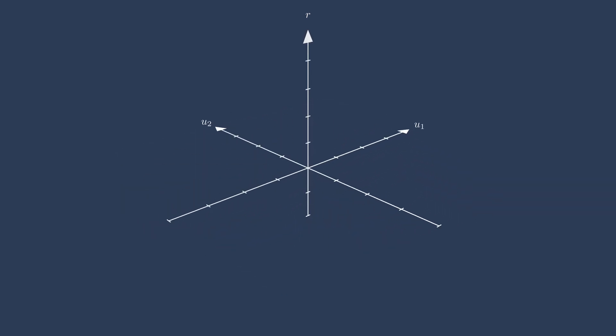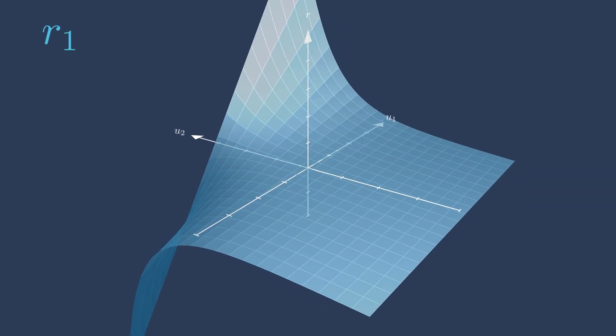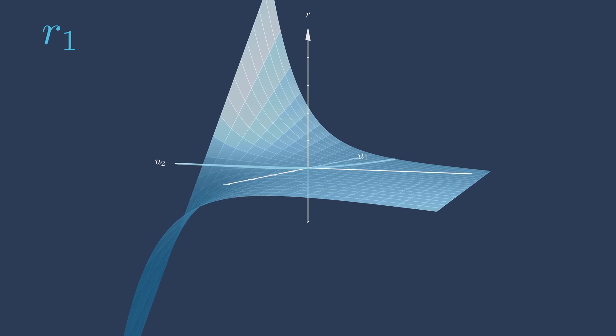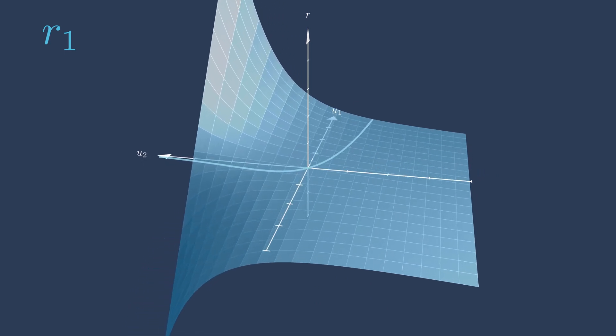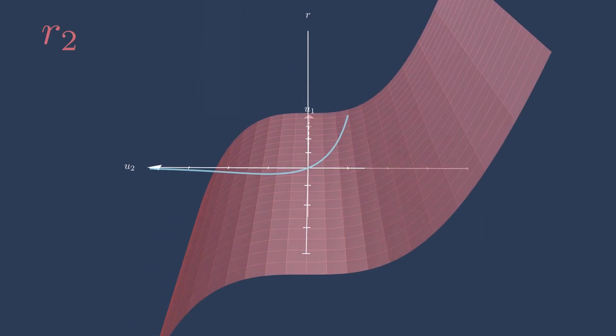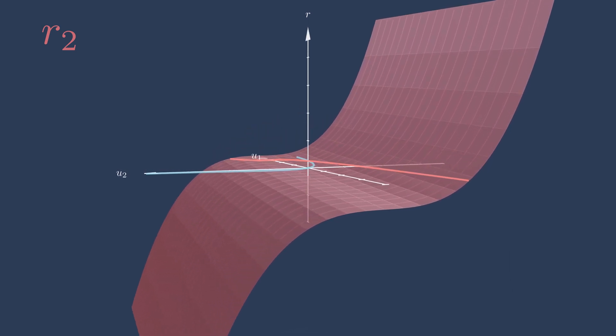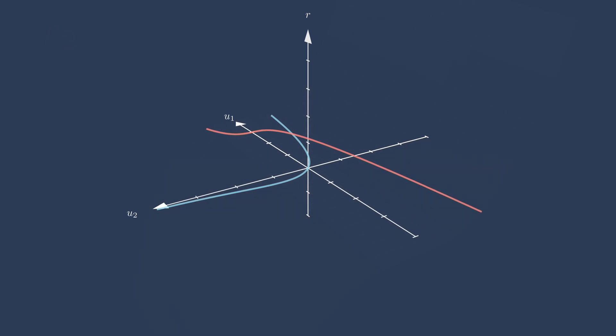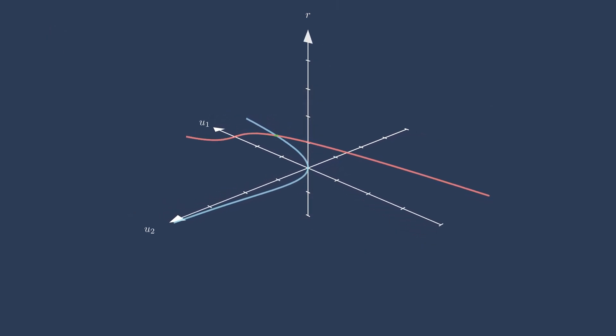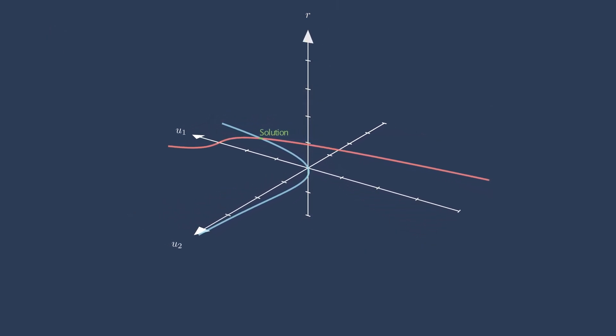In our made-up example problem, the first residual looks like this, and is equal to zero along this blue line. The second residual looks like this, and is equal to zero along this red line. The solution to our problem is where the two lines intersect, because that's the point where both residuals are zero.